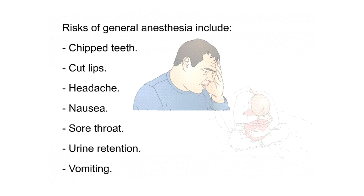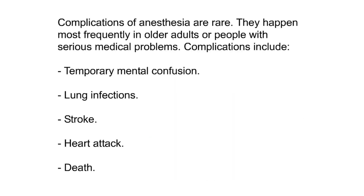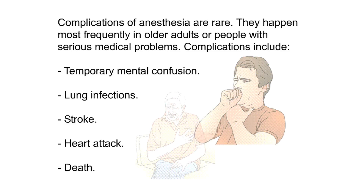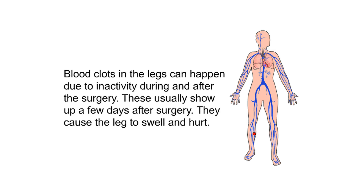Risks of general anesthesia include chipped teeth, cut lips, headache, nausea, sore throat, urine retention, and vomiting. Complications of anesthesia are rare and happen most frequently in older adults or people with serious medical problems. These include temporary mental confusion, lung infections, stroke, heart attack, and death. Blood clots in the legs can also occur due to inactivity during and after surgery, usually appearing a few days afterward, causing the leg to swell and hurt.